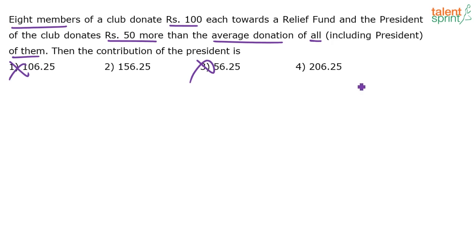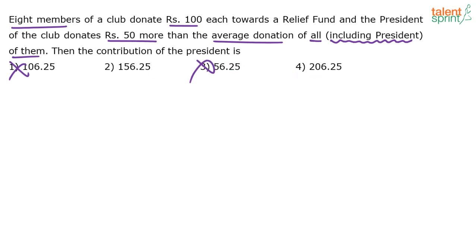Options one and three get eliminated because the average of the eight members is 100. Eight members donated 100 rupees each, average is 100, and the president donated 50 more. Even if you do not include the president in the group, the president's donation would be 100 plus 50, which is 150 — and in fact it will be more than 150 when the president is included. So 106 and 56 get eliminated straight. If one more option could be eliminated, we'd be done without solving at all.